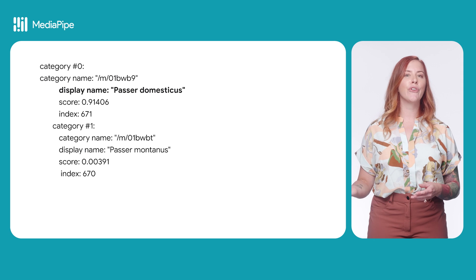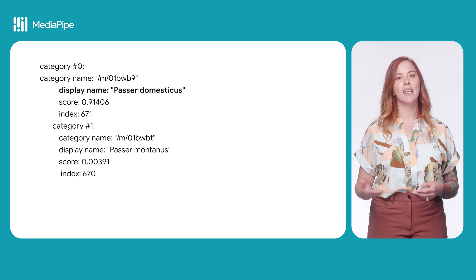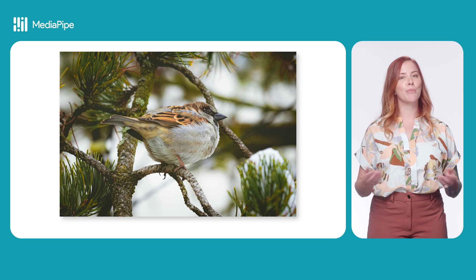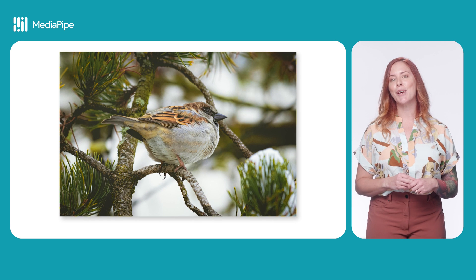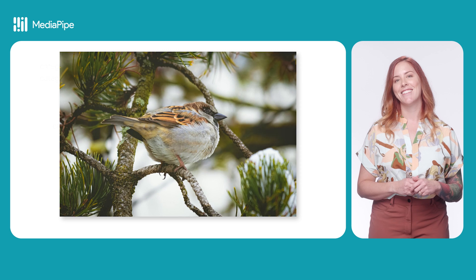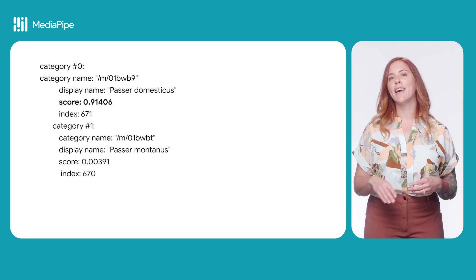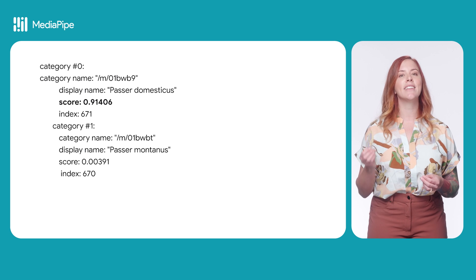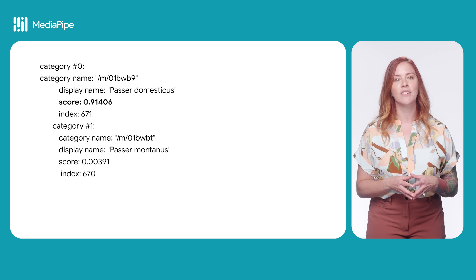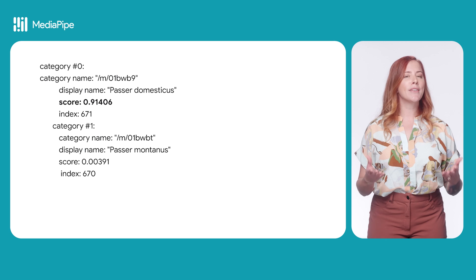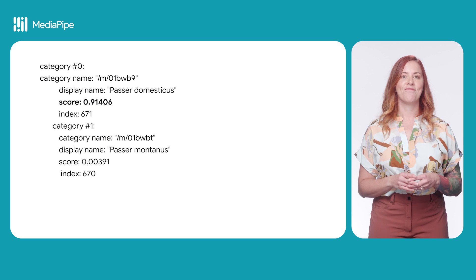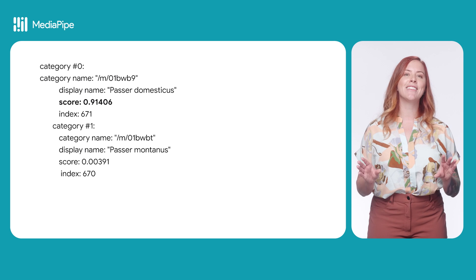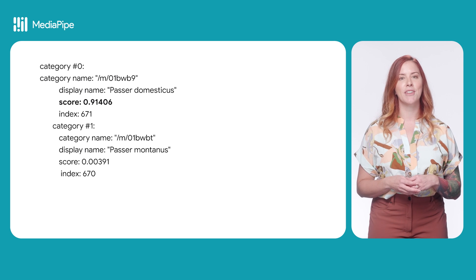In this example, the first category has a display name of Passer Domesticus, which apparently is a house sparrow — I had to look that one up, it's very cute. The score of 0.91406 is a score out of 1 for how likely the image is to belong to the Passer Domesticus class, so that's about 91%. The scores of all categories will add up to a total of 1, so we can definitely stop there and assume that's what's in our image.